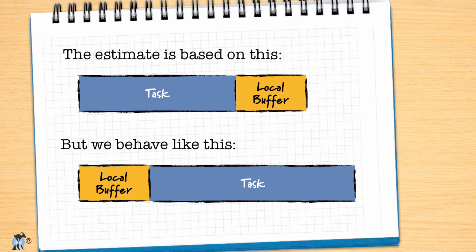Student syndrome is human nature, so it's not something we're going to want to fight. As we build up an Agile estimating and planning approach, we'll find that the short iterations of Agile help focus attention, reducing the impact of student syndrome.